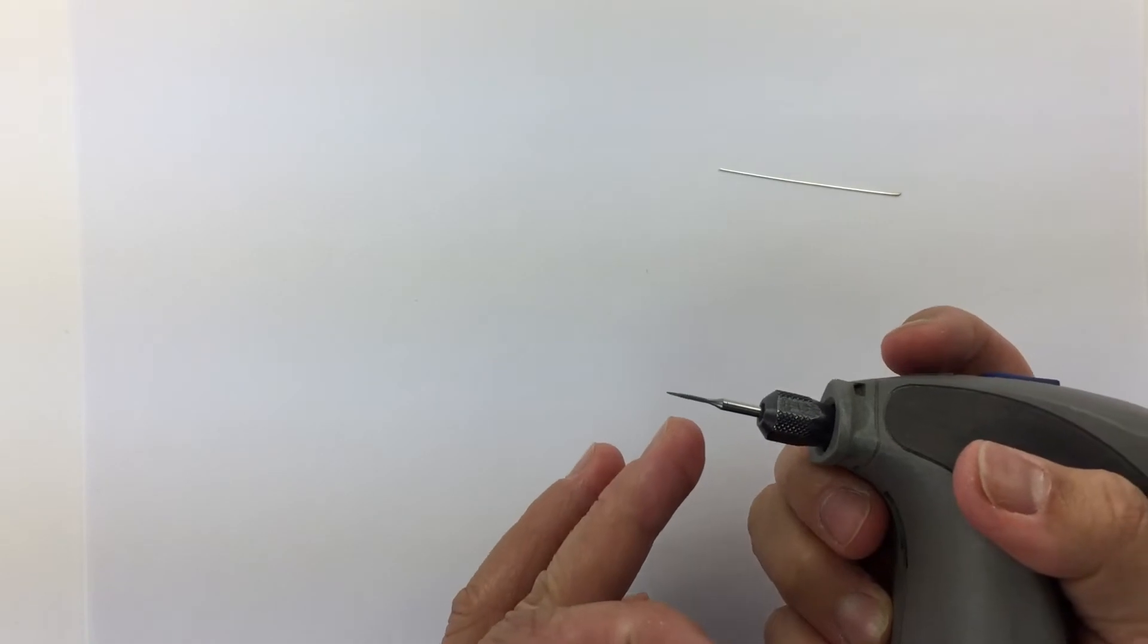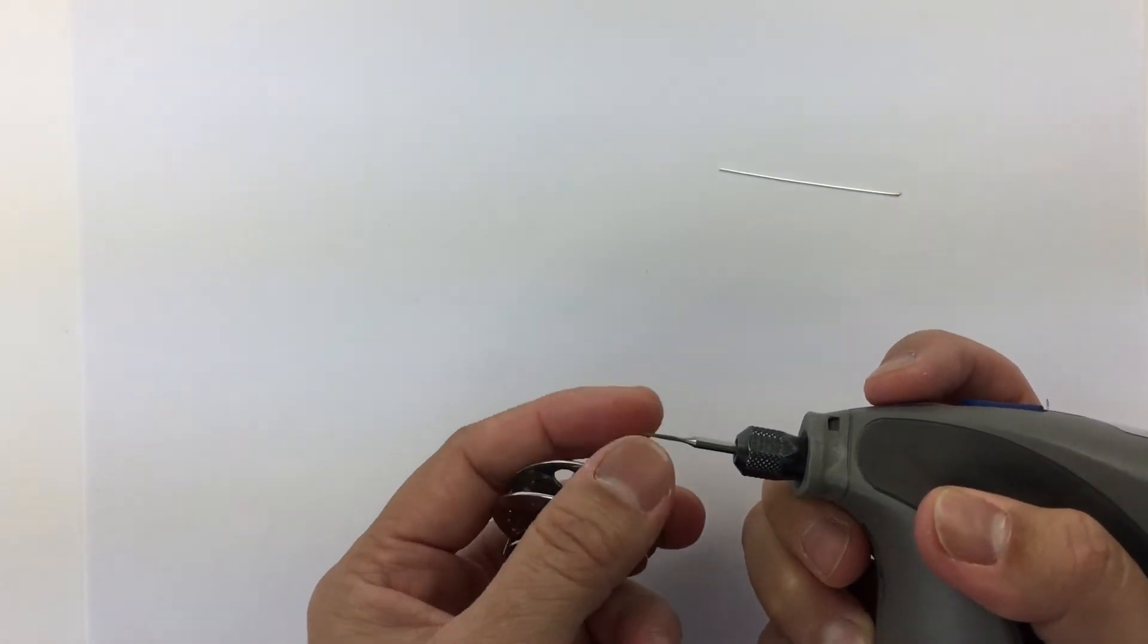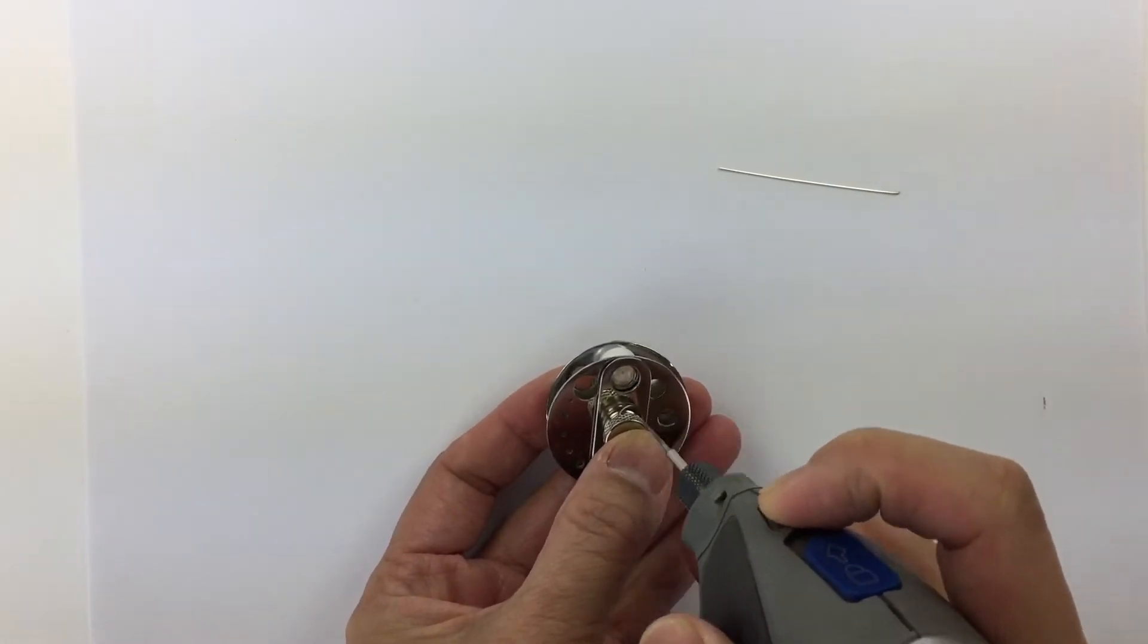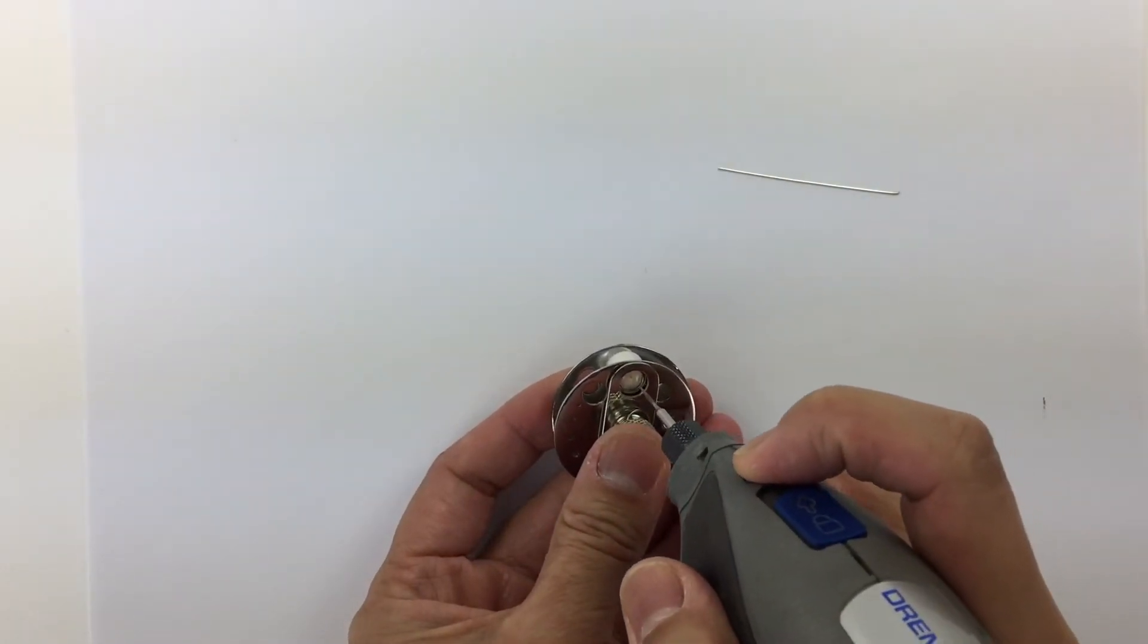Then, I have a pearl drill bit. It's very hard and very sharp. I hold it tight and I try to hold it as straight as I can.